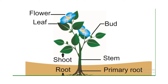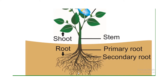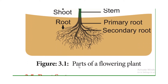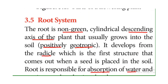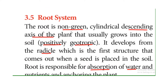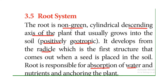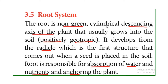The root system is the portion of the plant present under the ground. The root is non-green — it has no chlorophyll pigments. It is the descending axis of the plant, growing downward into the soil. It is positively geotropic, meaning it grows in the direction of gravitational force.